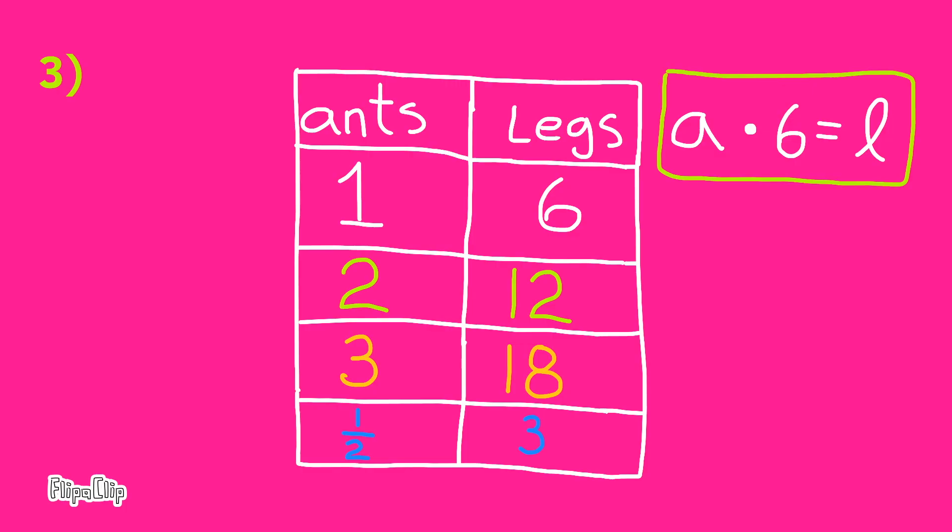An equation represented by this table would be: the number of ants times 6 equals the number of legs. Another equation would be: the number of legs divided by 6 equals the number of ants.